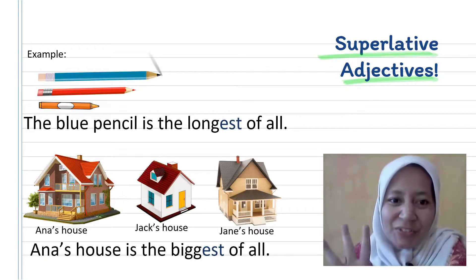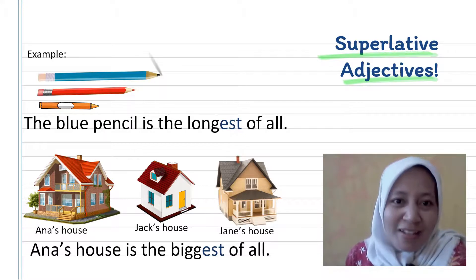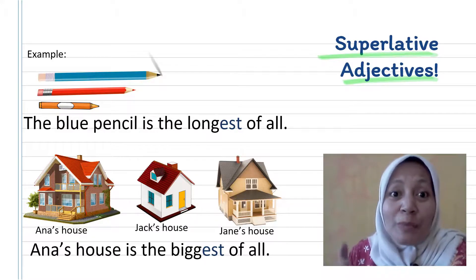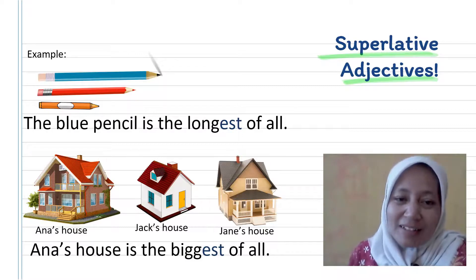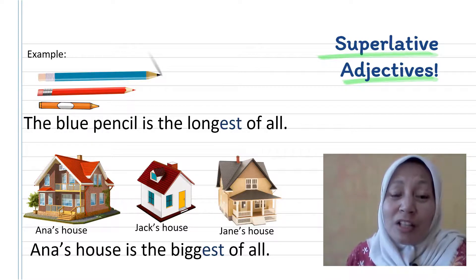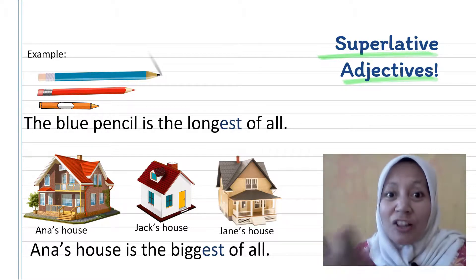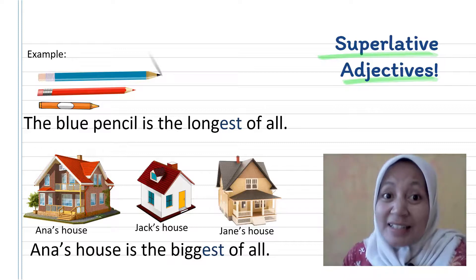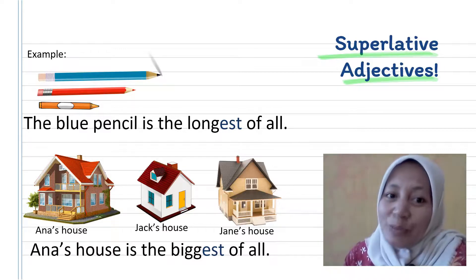I have three pencils: the blue pencil, the red pencil, and the orange pencil. We are going to talk about the length of these pencils. The blue pencil is the longest pencil. 'Long' has one syllable — a short word — so the sentence is: 'The blue pencil is the longest of all.'